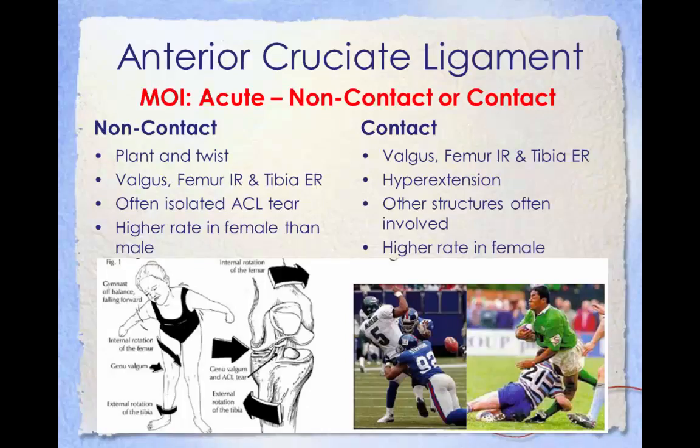Anterior cruciate ligament injuries have two different mechanisms: contact or non-contact. A non-contact ACL injury occurs as a result of a plant and twist, such as a cleated foot getting stuck in turf when changing directions — there is a valgus force on the knee, the femur internally rotates, and the tibia externally rotates, often resulting in an isolated ACL tear. Non-contact ACL injuries are 6 to 10 times more common in female athletes than male athletes in the same sport. Contact ACL injuries result from a valgus force where the femur internally rotates and the tibia externally rotates, or the knee hyperextends during contact, often resulting in more than just the ACL being injured. Contact injuries are also more common in female athletes.